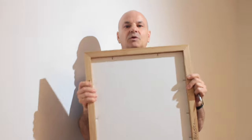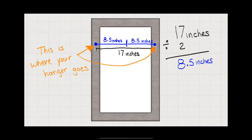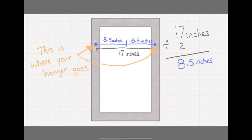Then the next measurement you make is just the simple distance between the two D-rings. And in this case, I've already measured that it's 17 inches. So we cut that in half.